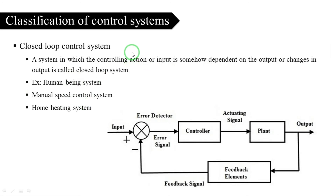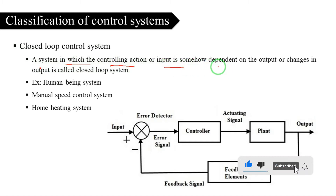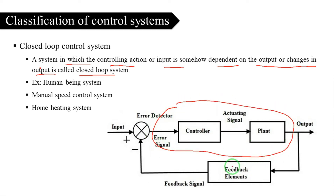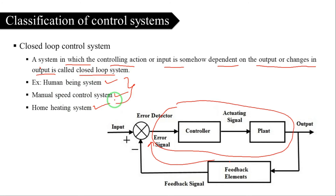Now coming to the closed-loop control system. In a closed-loop system, the controlling action or input is in some way dependent on the output or changes in the output. The diagram is similar to the open-loop, but feedback elements are connected. Examples include the human being system, manual speed control system, and home heating system.